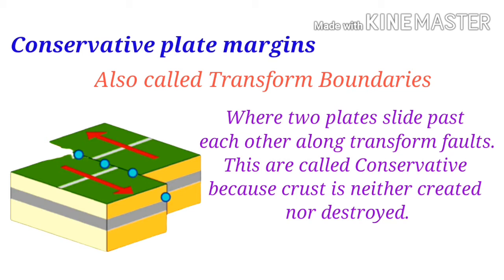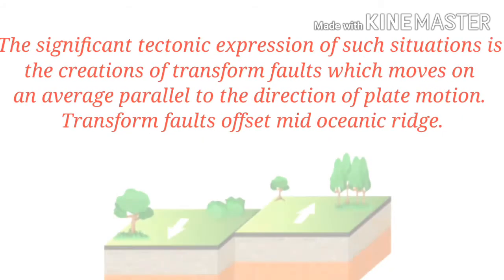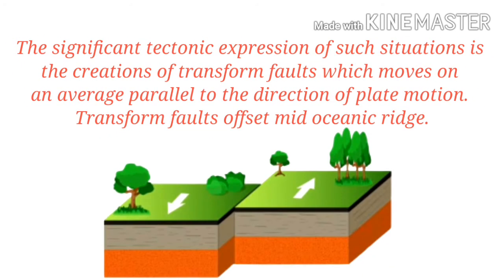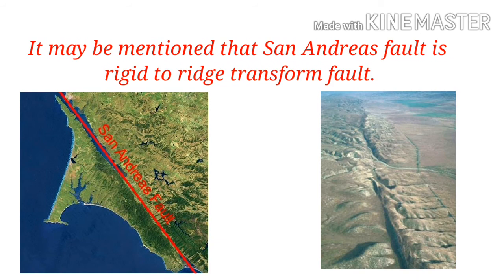These are called conservative boundaries because crust is neither created nor destroyed. The significant tectonic feature of such situations is the creation of transform faults, which move on average parallel to the direction of plate motion. Transform faults offset mid-oceanic ridges. It may be mentioned that the San Andreas Fault is a ridge-to-ridge transform fault.